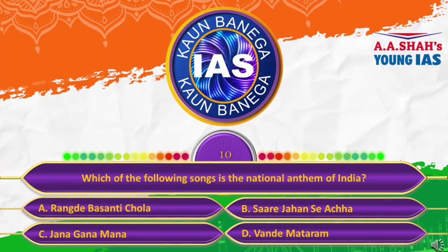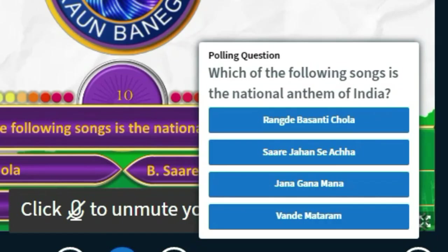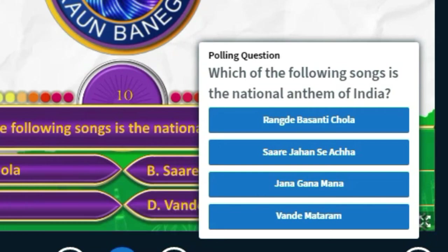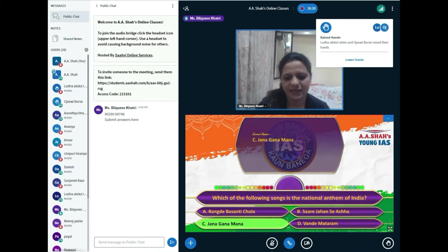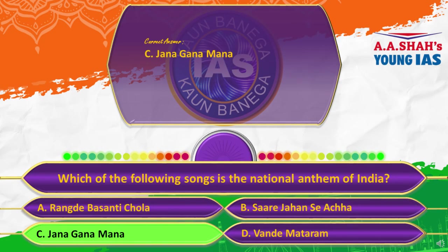The tenth question: Which of the following songs is the national anthem of India? A, Rang De Basanti Chola; B, Sare Jahan Se Achha; C, Jana Gana Mana; or D, Vande Mataram. The correct answer is C, Jana Gana Mana. Jana Gana Mana is the national anthem of India.